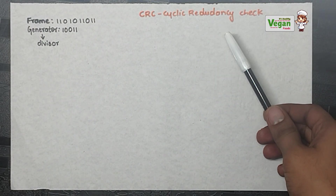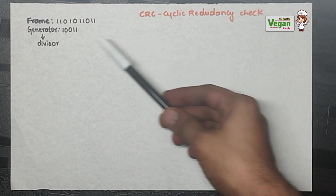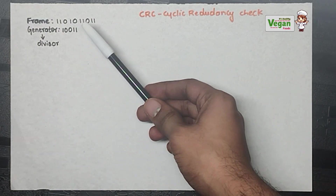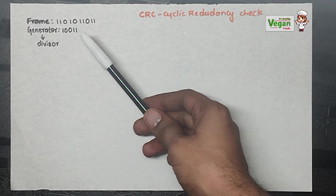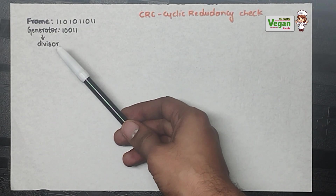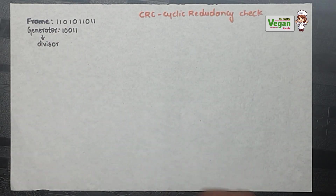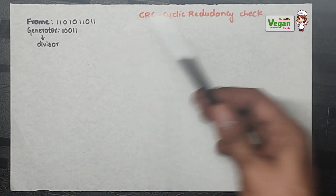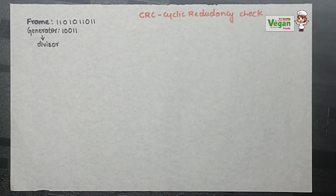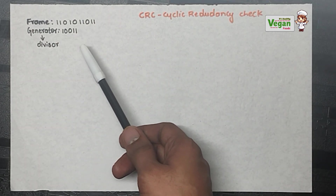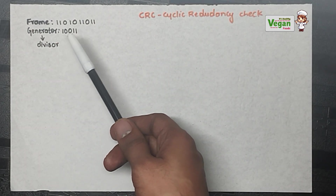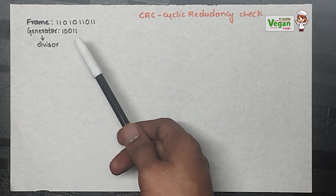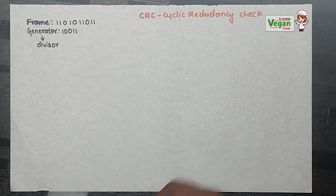To solve the CRC problem, there will be a given frame and a generator. This generator can also be called the divisor. The generator can be given in two forms: the first form uses zeros and ones, that is binary bits, or it can be given in the form of a polynomial.